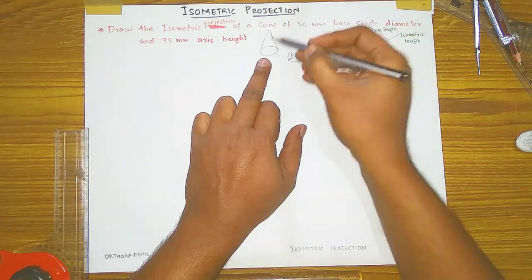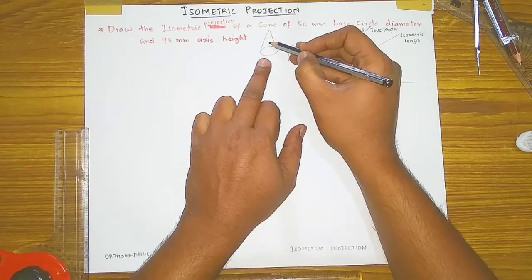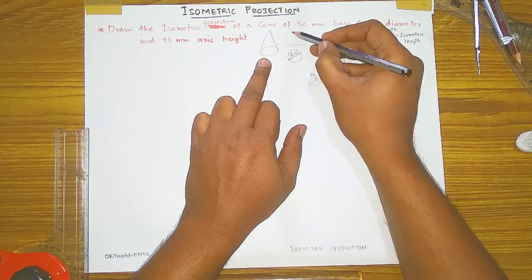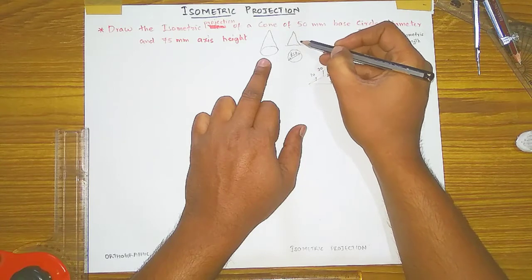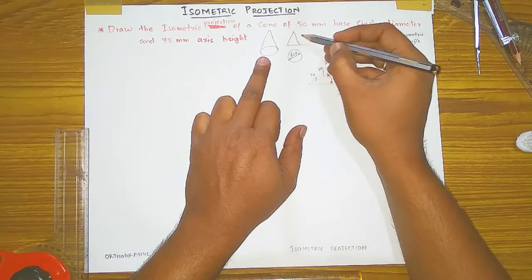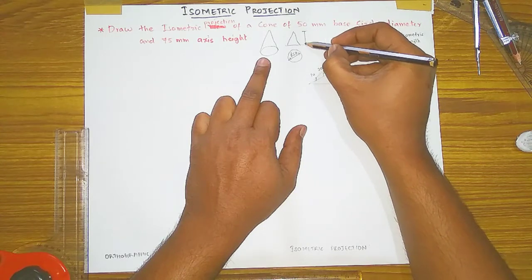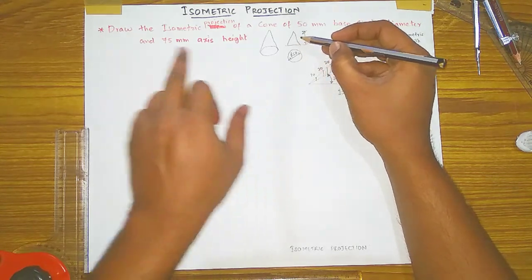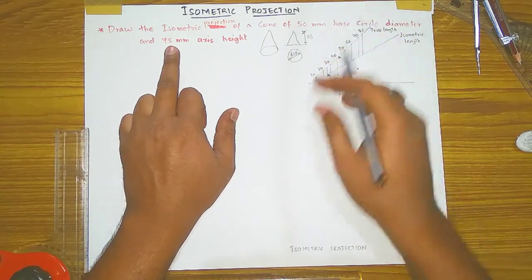If you see this cone from the front view, it looks like a triangle — like a pyramid. This is the front view of the cone. The height of this pyramid — the axis height — is how much? 75 mm. So its height is 75 mm.